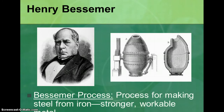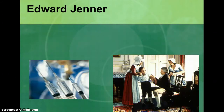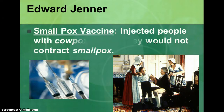Henry Bessemer created the process for making steel from iron. Steel is stronger and more workable, and he created the machine that made it possible to produce steel at scale. Buildings now rely mostly on steel.